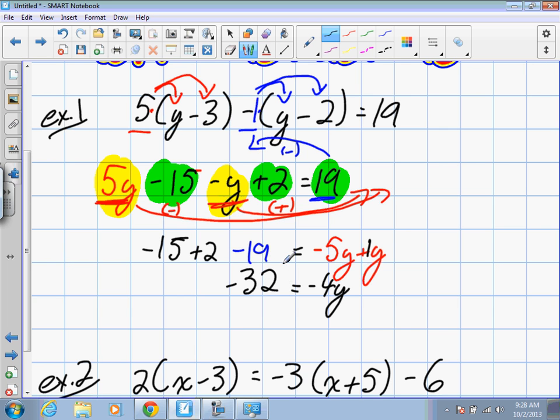Still one more step. We haven't isolated for y yet. So I need to isolate just for this y, which means I need to move what to the other side? Negative 4. So this is a negative using multiplication. To move this to the other side, I have to use what? Division. And what will I divide by? Negative 4. So y will become what number? What is negative 32 divided by negative 4? 8. A lot of steps to this one.